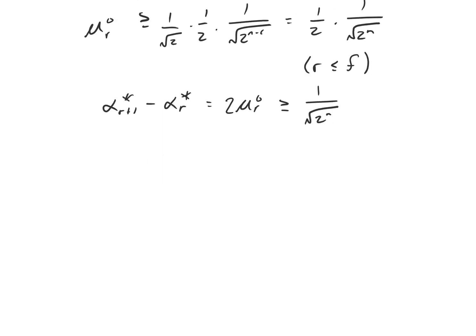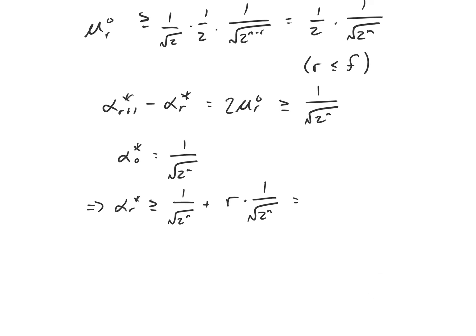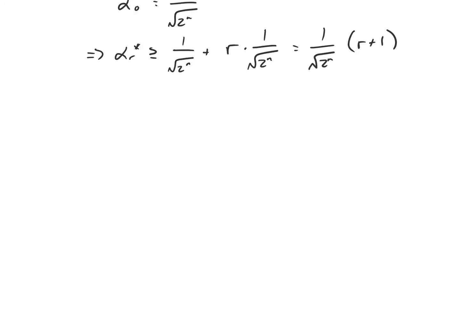Since alpha sub zero star, the initial coefficient in front of x star, equals 1 over root(2^n), alpha sub r star is going to be at least 1 over root(2^n) — this initial value — plus r times 1 over root(2^n), the minimum increase per application of the subroutine. Rewriting, this is just 1 over root(2^n) times (r + 1). We want to find how many times we have to apply the subroutine to get alpha star to be at least 1 over root 2.